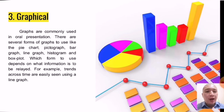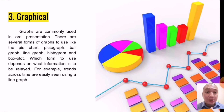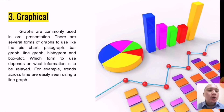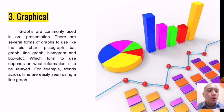For our third method, we can also use graphs, which are commonly used in oral presentations. Several forms include the pie chart, pictograph, bar graph, line graph, histogram, and box plot. There's an old adage that a picture can paint a thousand words — people easily understand information when they see a chart versus a list of numbers. For example, if you have population data shown through a bar graph, it would be difficult to read in textual or narrative form.